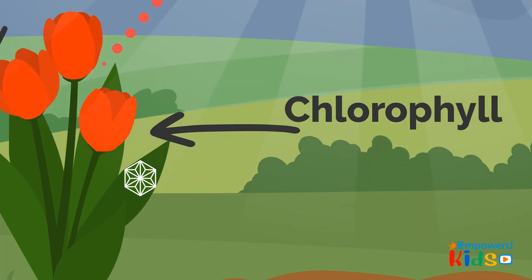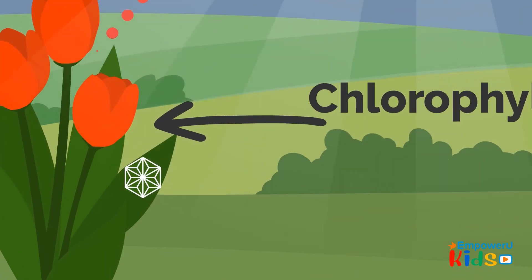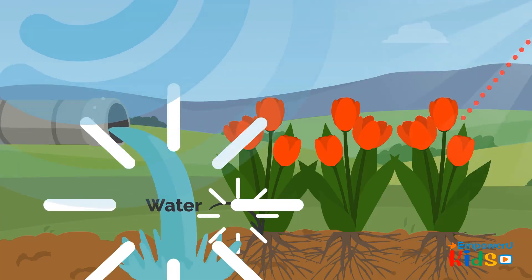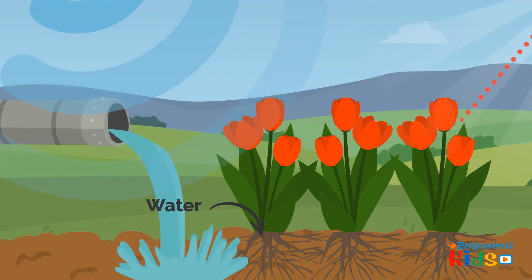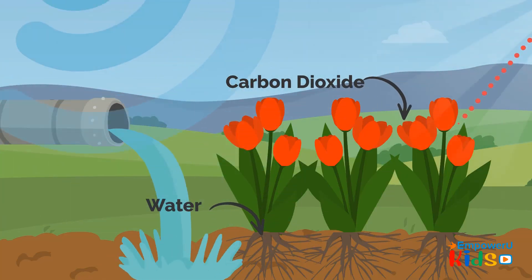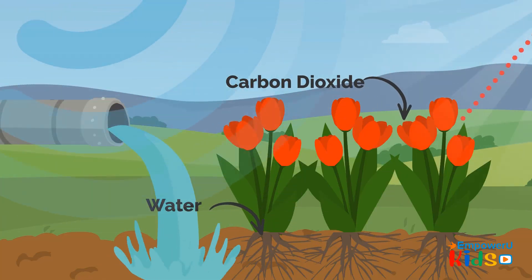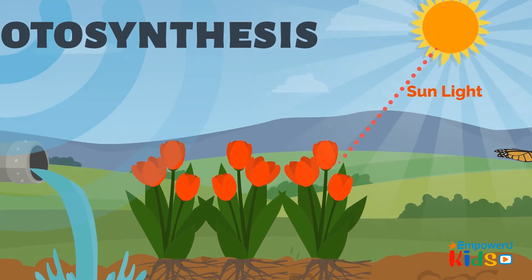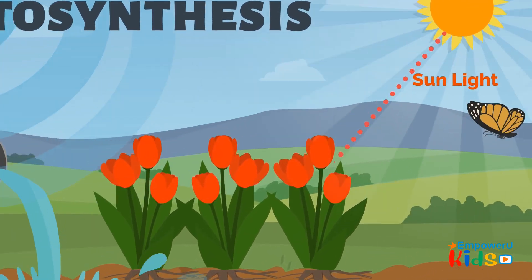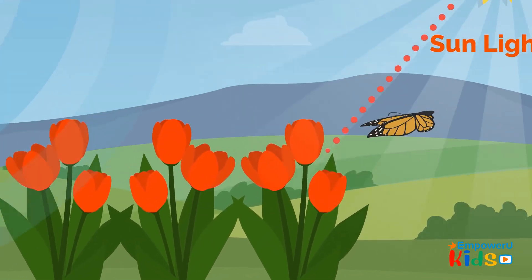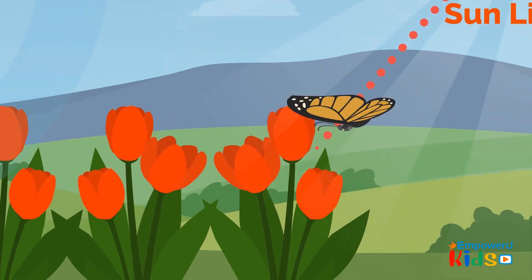Chlorophyll is a substance in all green plants, especially in the leaves. Plants take in water from the soil and carbon dioxide from the air. Photosynthesis is very important because almost all living things depend on plants for food.